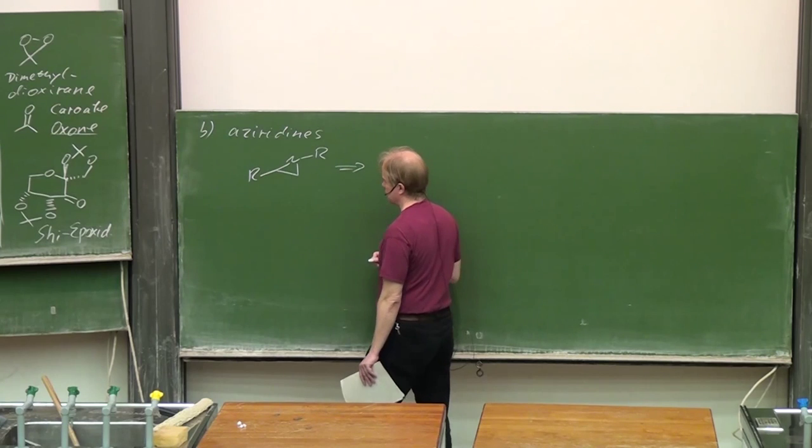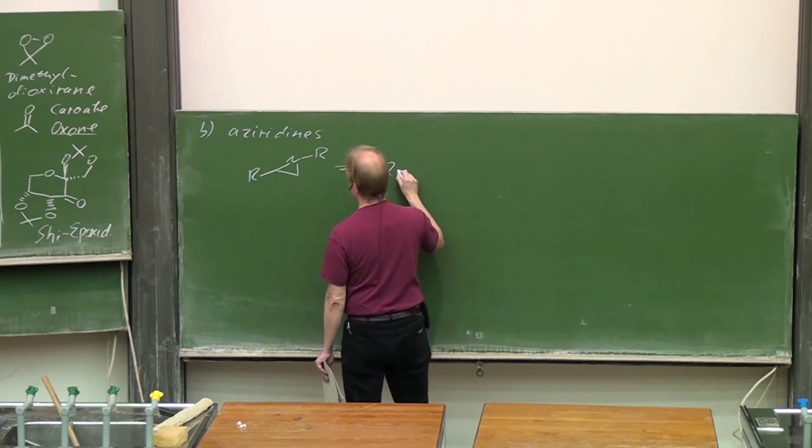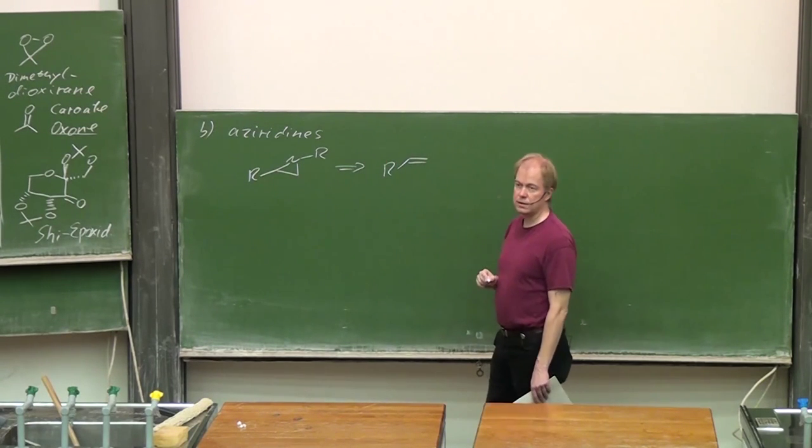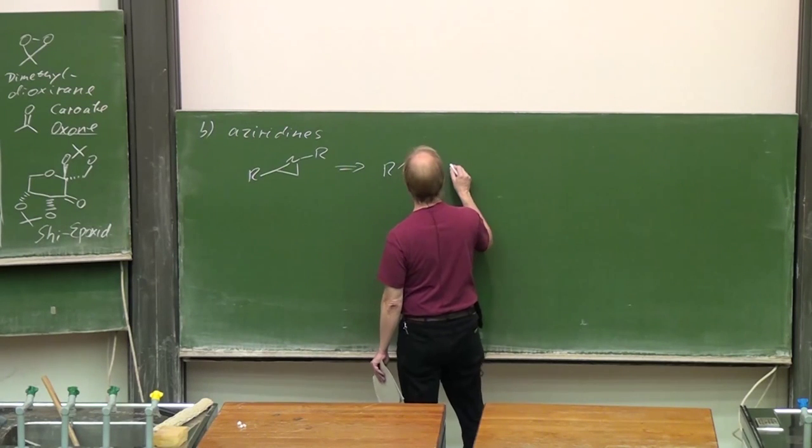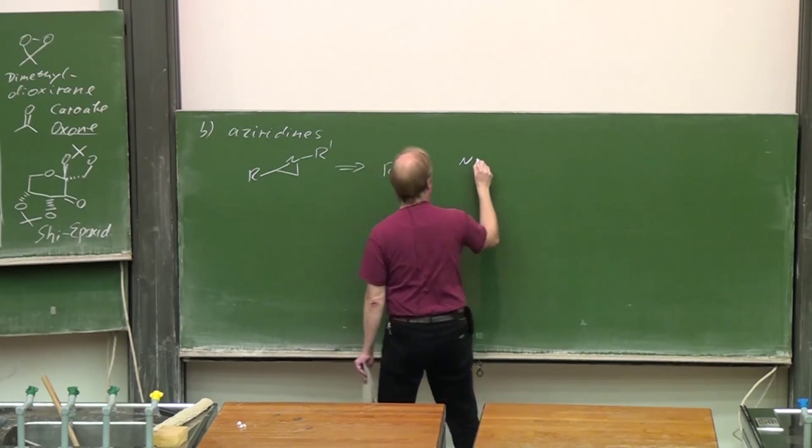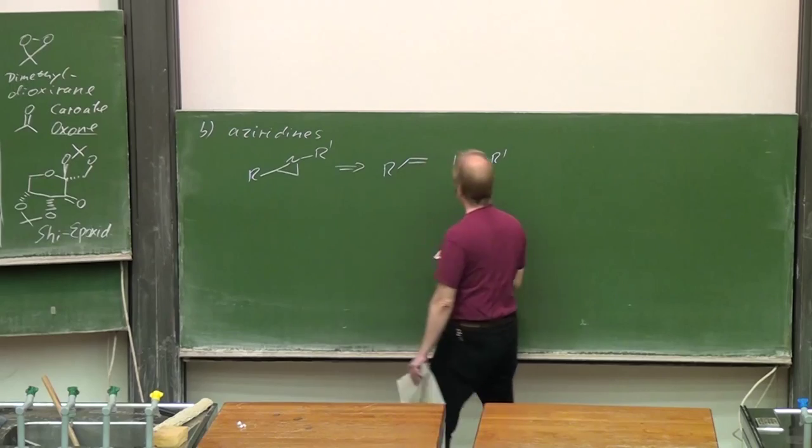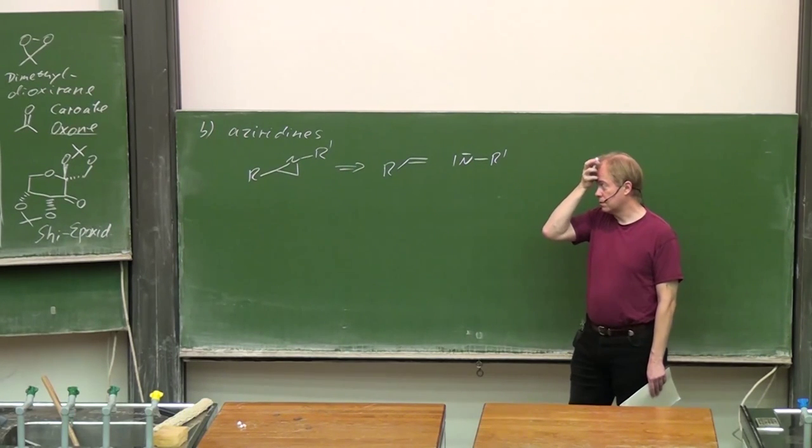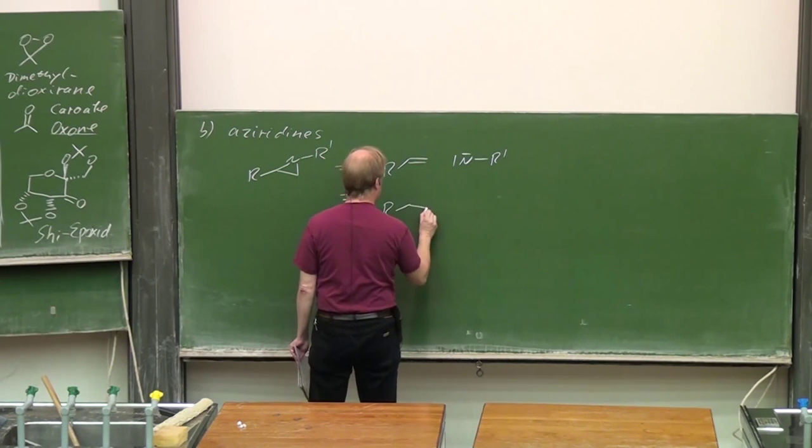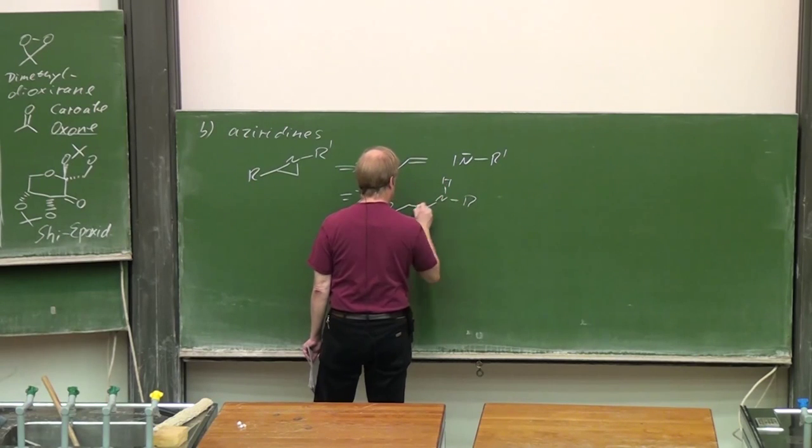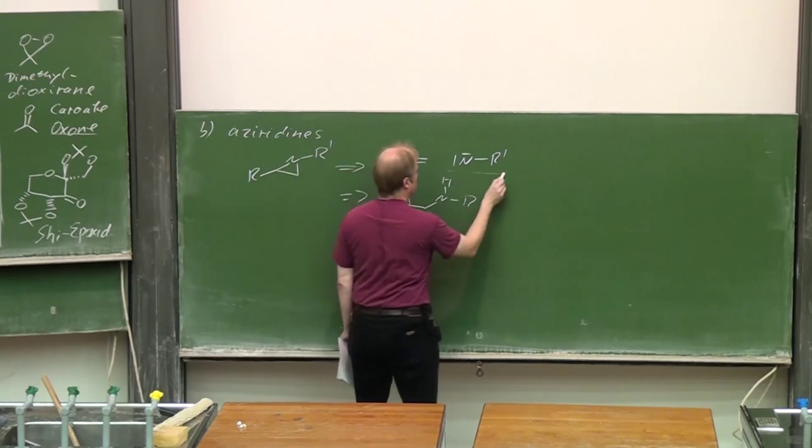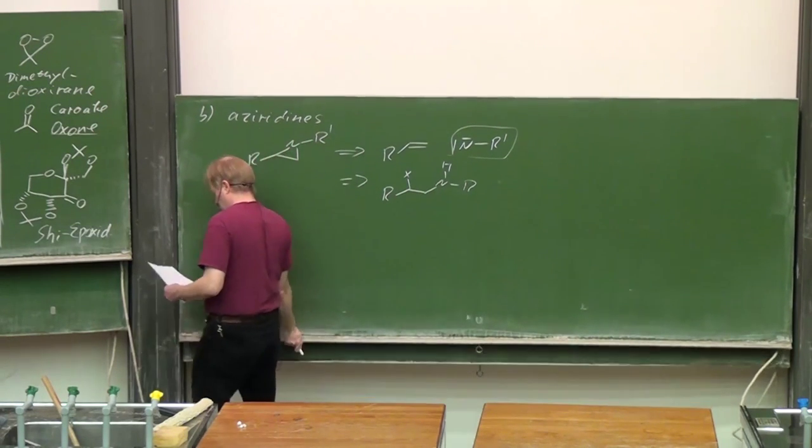Retrosynthetic analysis can lead us, for instance, to that combination: olefin plus a nitrene. You can also think about something like that and a leaving group X here. But this method is quite popular.